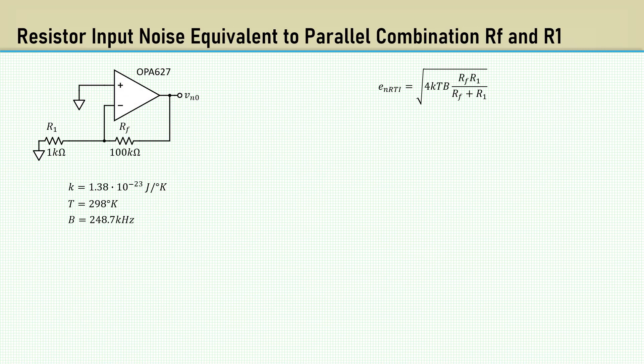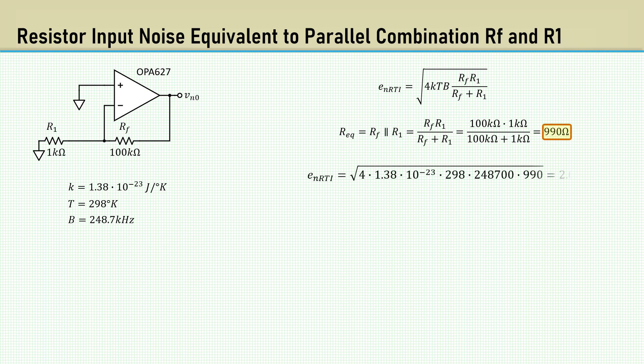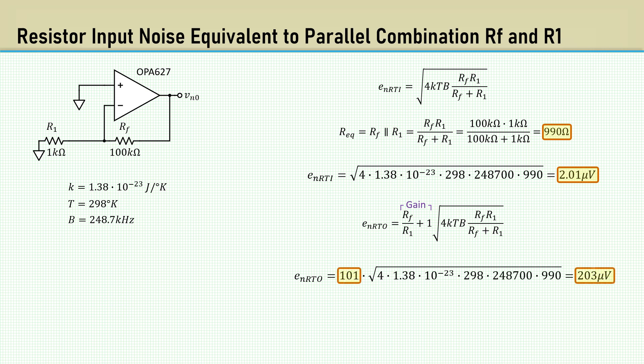Let's put that nifty little equation to work and calculate the resistor noise. The parallel combination of RF and R1 is 990 ohms. This gives us 2.01 microvolts. To get the noise relative to the output, we simply multiply by the non-inverting gain of 101, which gives us 203 microvolts.